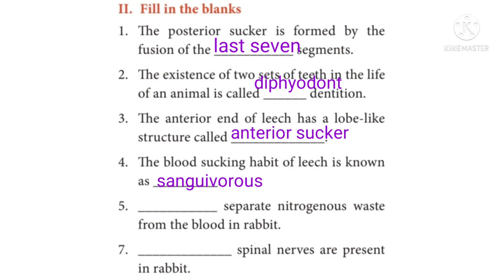Question 5: Nephrons separate nitrogenous waste from the blood in rabbit. Question 6: 37 pairs of spinal nerves are present in rabbit.